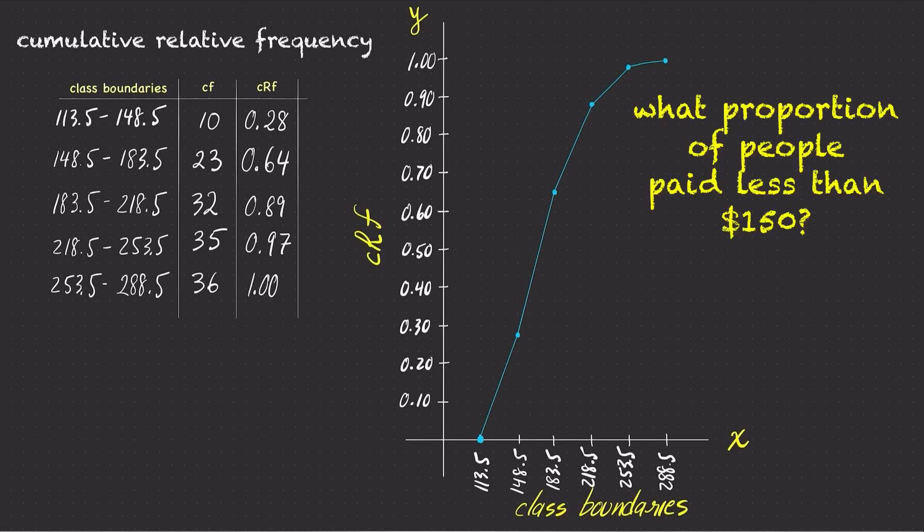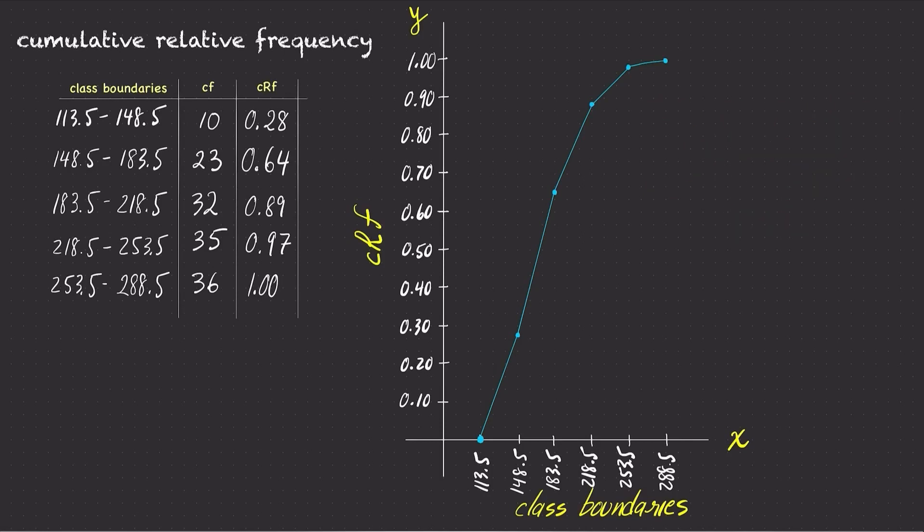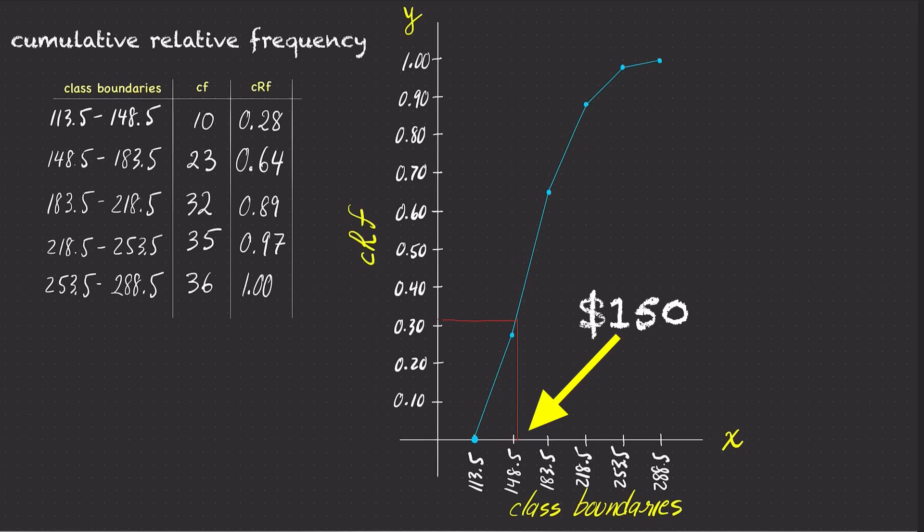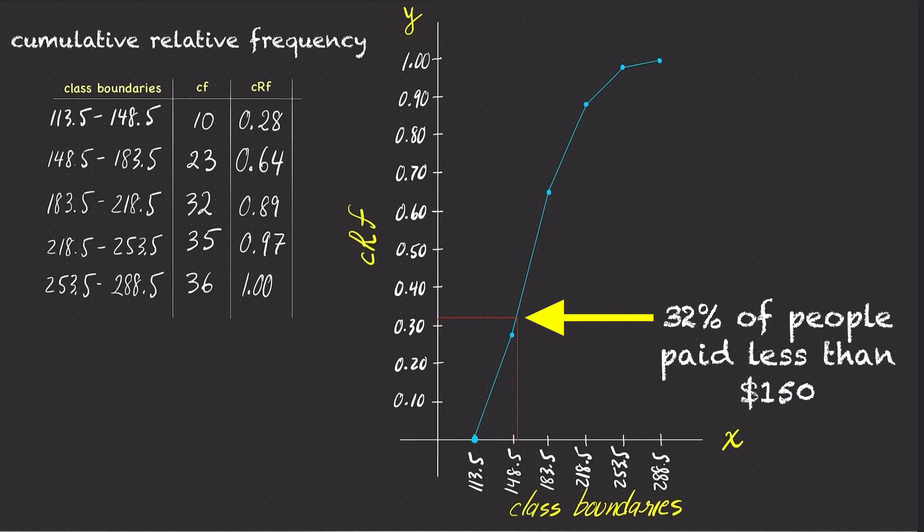If you want to know what proportion of people who pay less than $150 for their health insurance premium, simply go to the X axis, draw a vertical line where 150 appears to be until the line reaches the graph, and then draw a horizontal line to the left from that point until the line reaches the Y axis. This is the percentage of people who pay less than $150 for the health insurance premium.